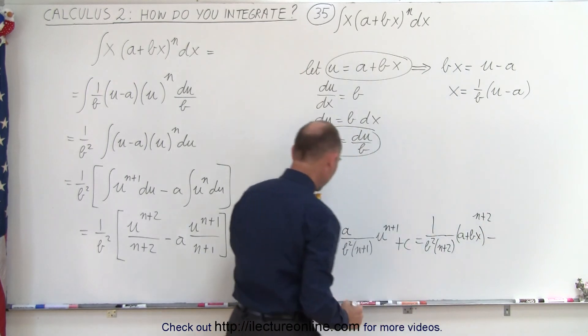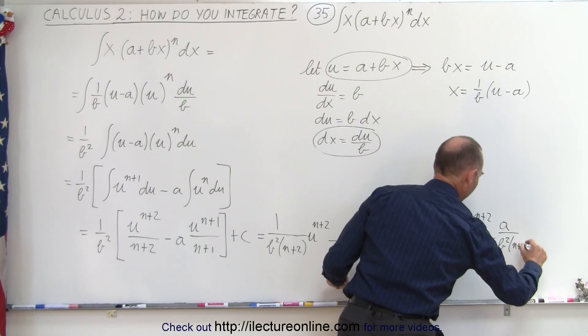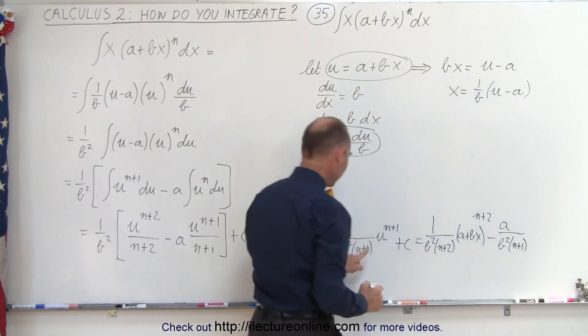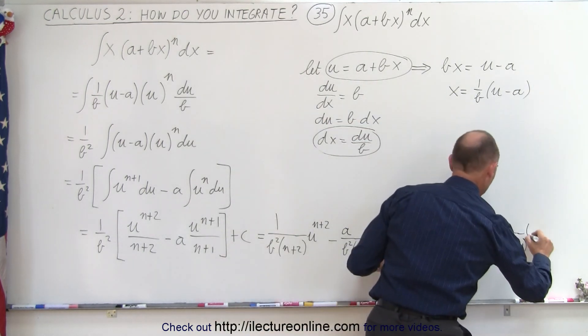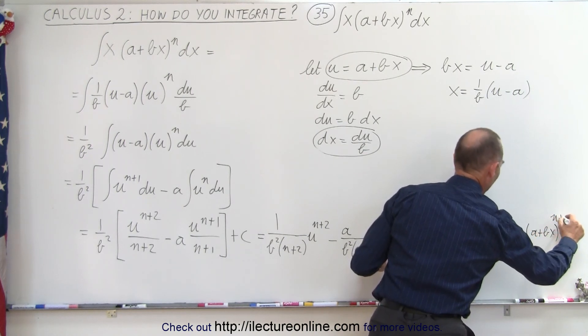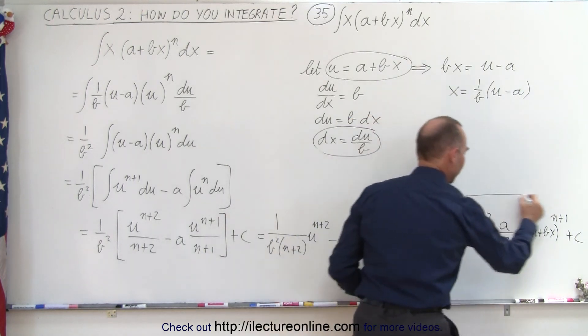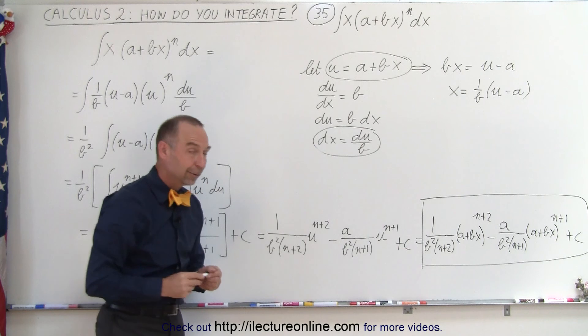Minus a over b²(n+1) times (a + bx)^(n+1), plus the constant of integration. This then becomes the result of our integral.